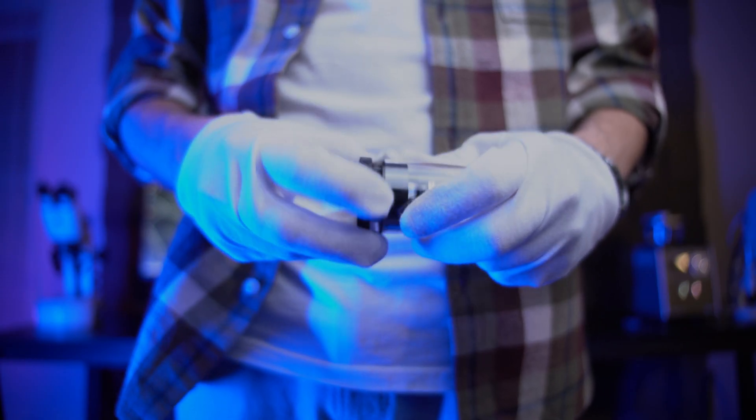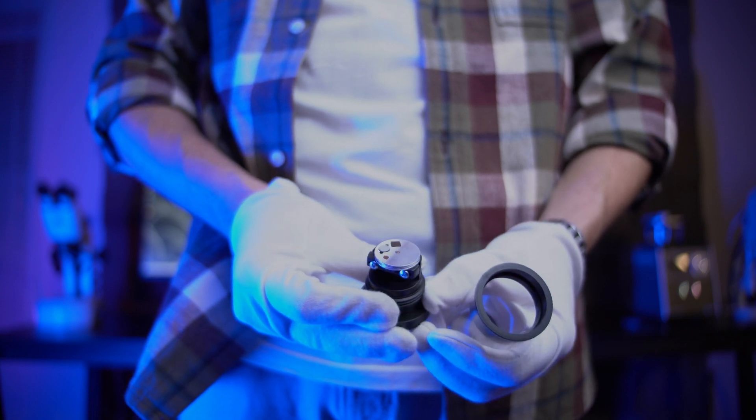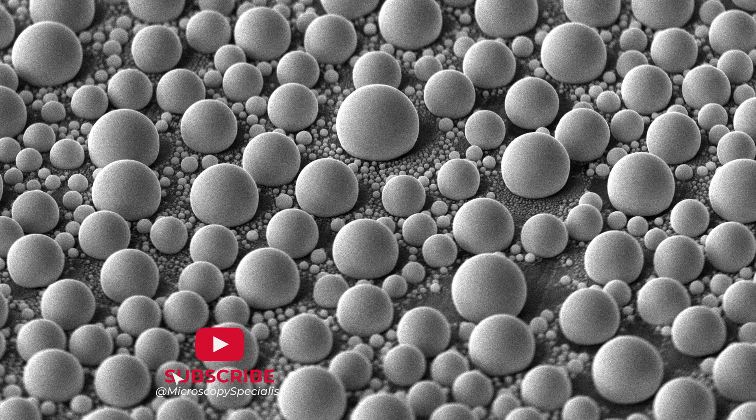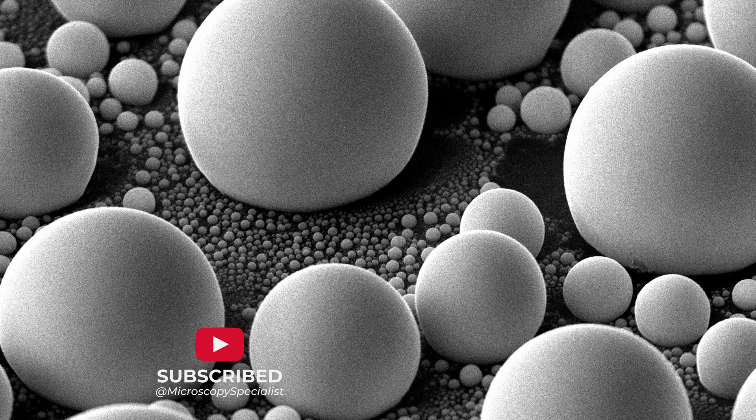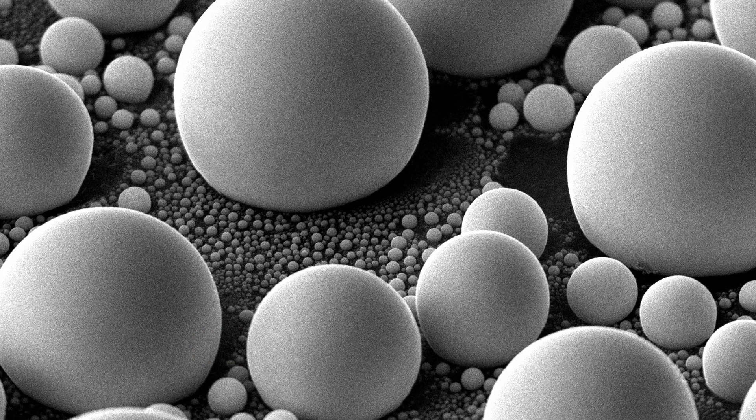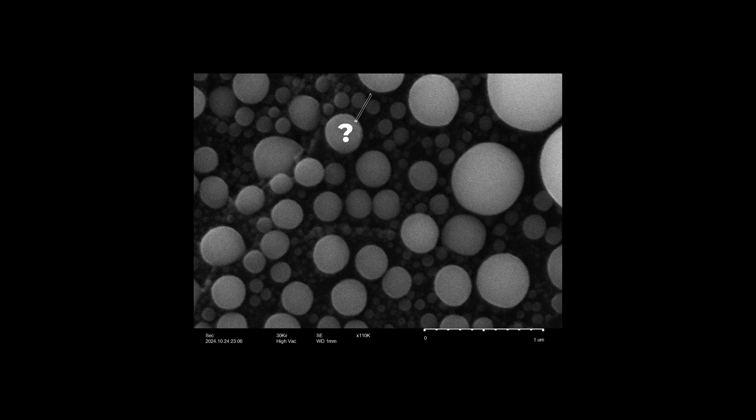Today we will be working with a special sample resolution standard – tin on carbon. It looks like tin spheres of different diameters. This sample is ideal for setting up and demonstrating the microscope. We can also understand the true resolution of our microscope by measuring the minimum visible gap between the spheres.